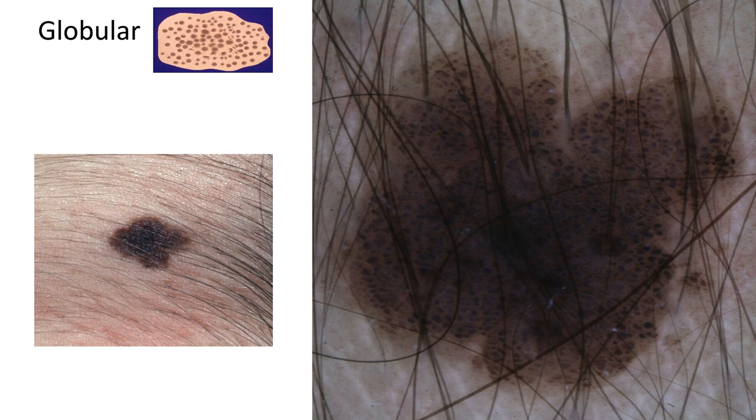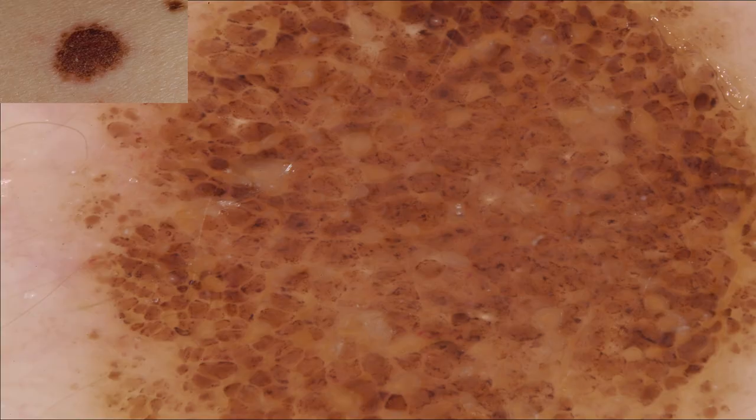The second pattern is the globular pattern, characterized by brown, blue, or black rounded structures known as globules. Here we have a beautiful example of a globular pattern throughout the lesion. Another example shows brown round structures — globules — with larger bluish globules present as well. Sometimes those globules can have an angulated appearance; this is known as a cobblestone appearance. Cobblestone globules are also suggestive of a congenital origin.